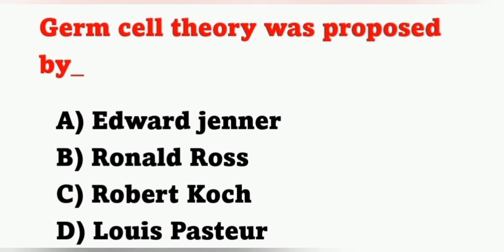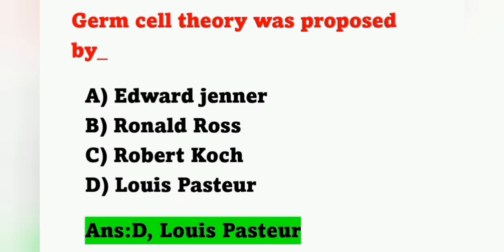Next question: germ cell theory was proposed by — option A: Edward Jenner, option B: Ronald Rhodes, option C: Robert Koch, option D: Louis Pasteur. Who proposed germ cell theory? The correct answer is option D, Louis Pasteur.